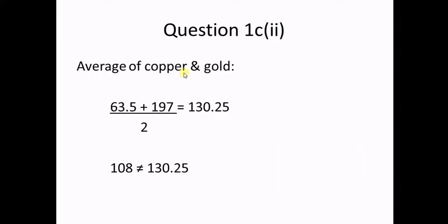If we do the average mass of the copper and gold, 63.5 and 197, divide that by 2 and get 130.25. You can see quite clearly that 108 is nowhere near 130.25.